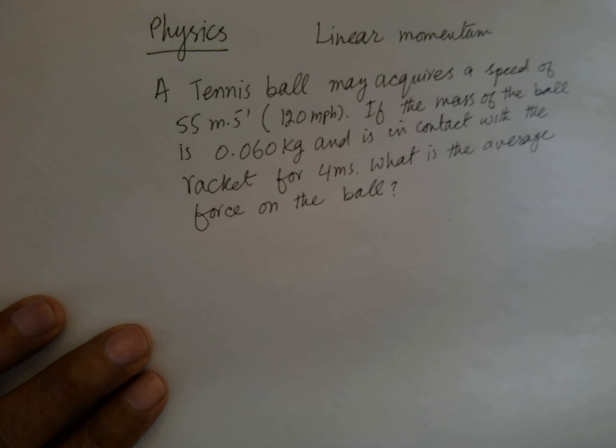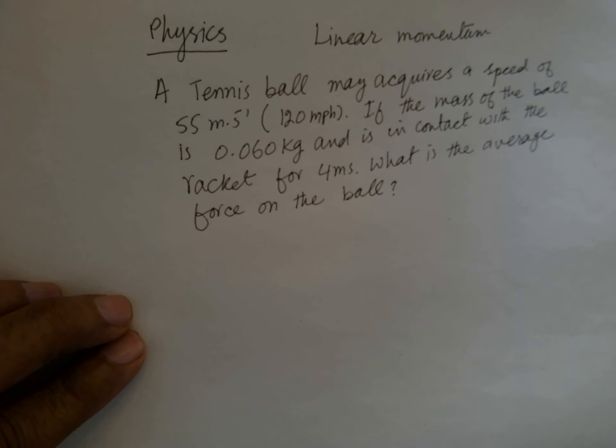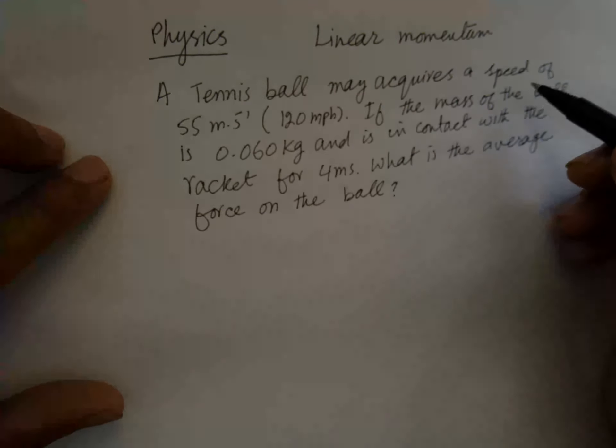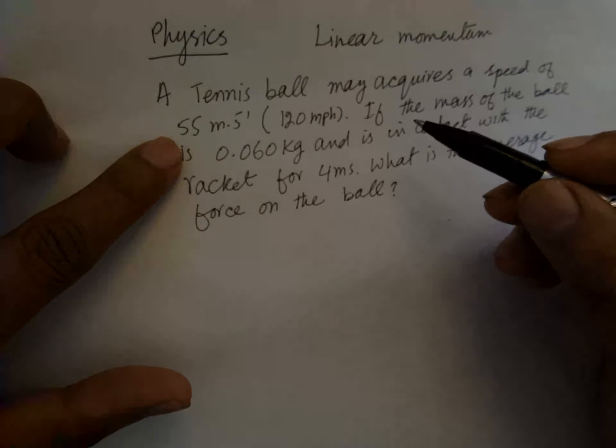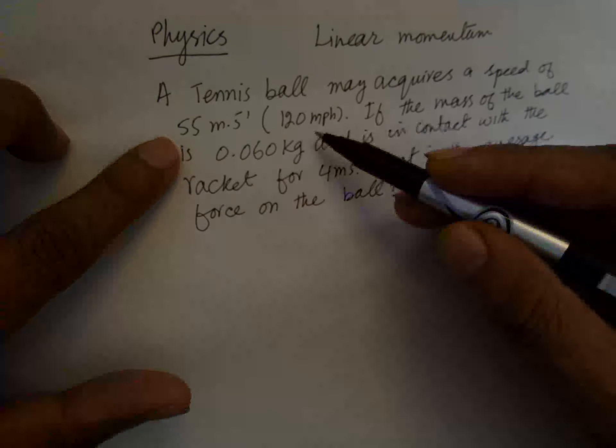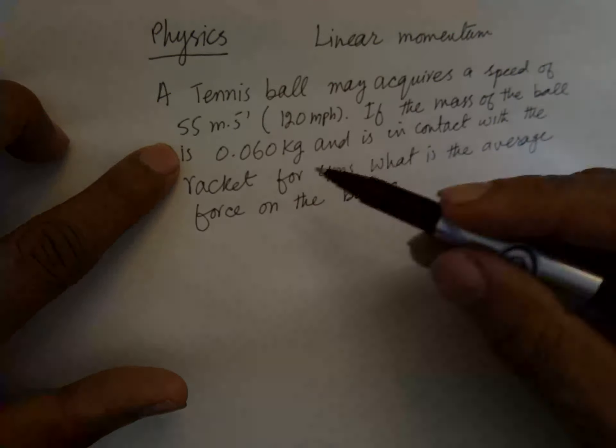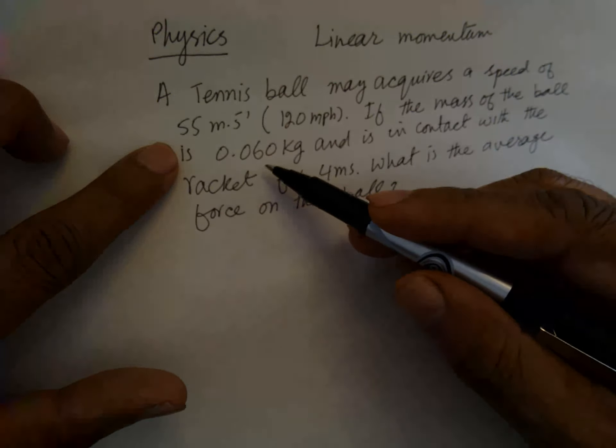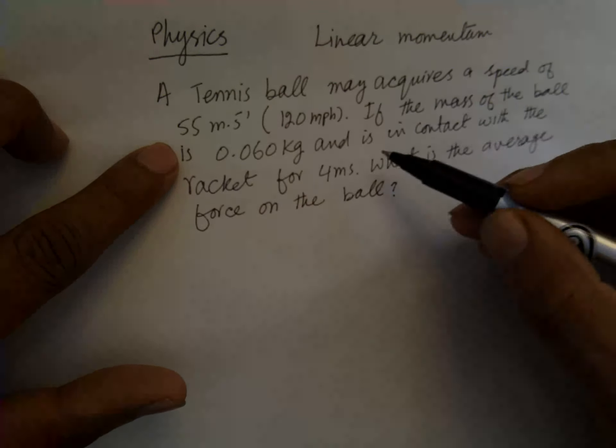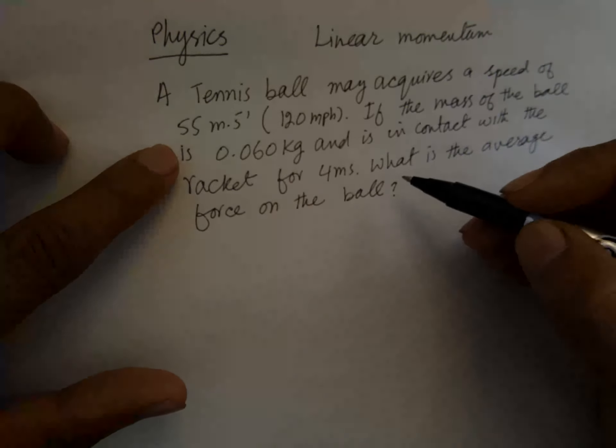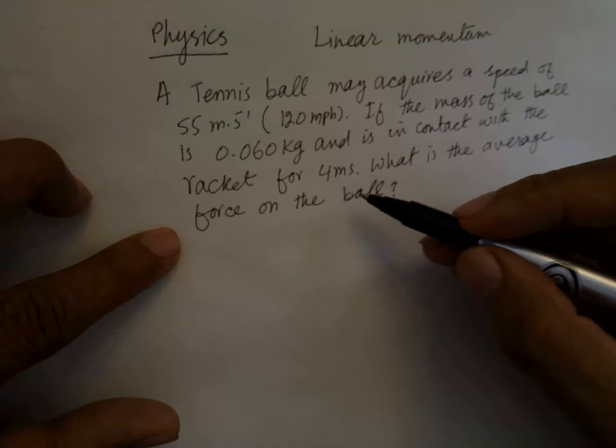Hello, physics: linear momentum. This is a new chapter, so we will solve this problem. A tennis ball may acquire a speed of 55 meters per second, which is equivalent to 120 miles per hour. The mass of the ball is 0.060 kg and is in contact with the racket for 4 milliseconds.